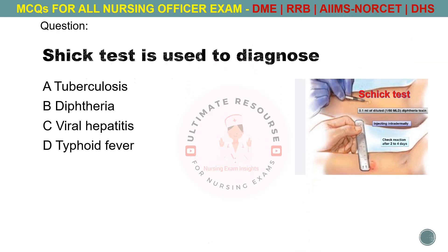Schick test is used to diagnose. Options are A. Tuberculosis, B. Diphtheria, C. Viral hepatitis, D. Typhoid fever. The answer is B. Diphtheria.